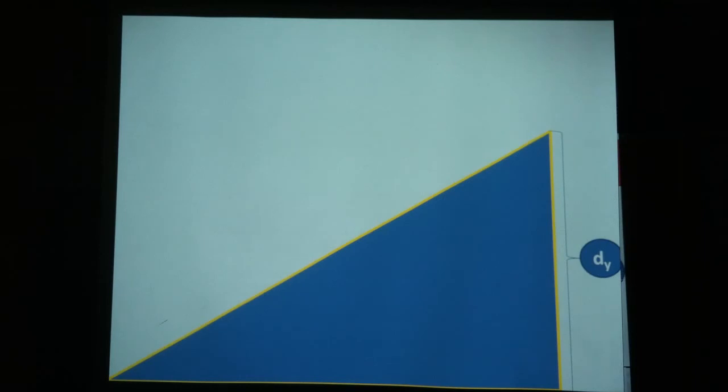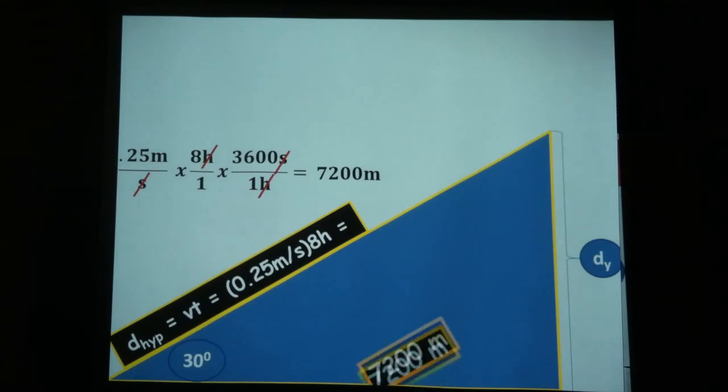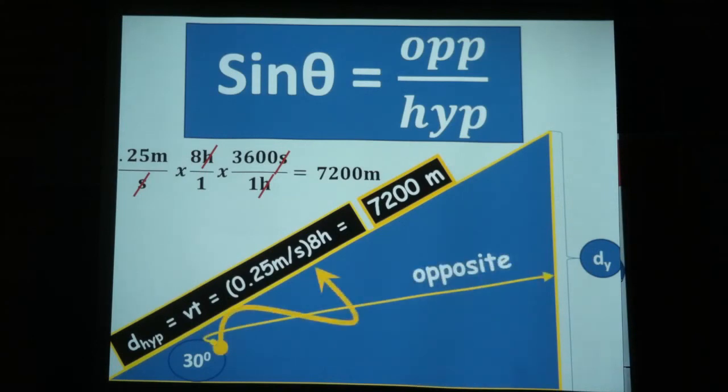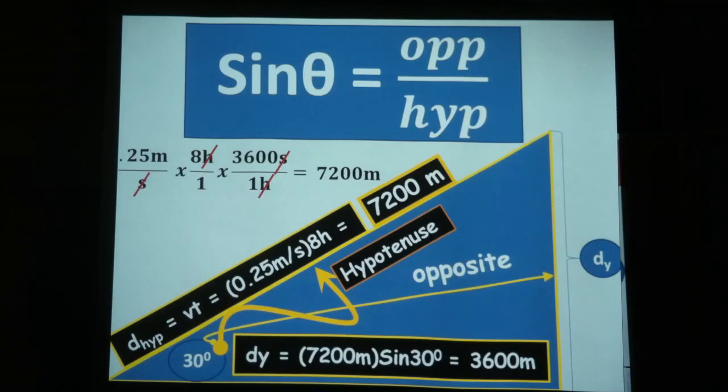That's going to be dy, the height of the mountain. That's going to be 30 degrees. That's going to be d hypotenuse, d Sisyphus, equals vt, which equals 0.25 meters per second times eight hours. Doing the dimensional analysis quickly comes out to be 7,200 meters. 7,200 meters, and then sine theta equals opposite over hypotenuse. That's opposite, that's hypotenuse, and it's going to be 3,600 meters.